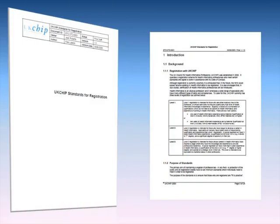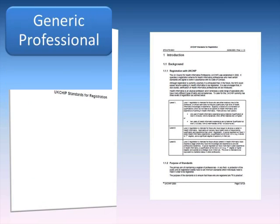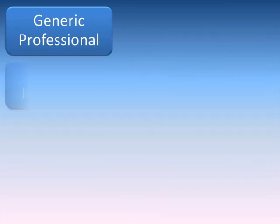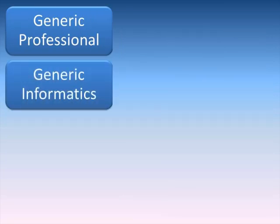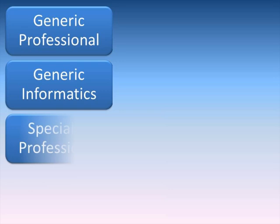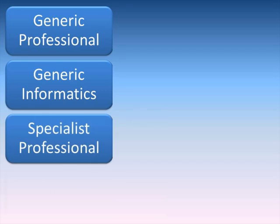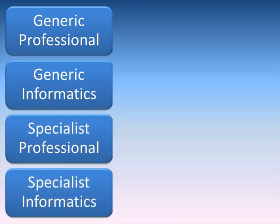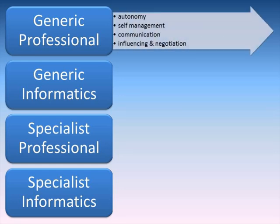The UKCHIP standards are divided into four areas: Generic Professional Standards, Generic Informatics Standards, Specialist Professional Standards, and Specialist Informatics Standards. The Generic Professional Standards are areas that all professionals should understand — things like autonomy, self-management, communications, influencing and negotiation.